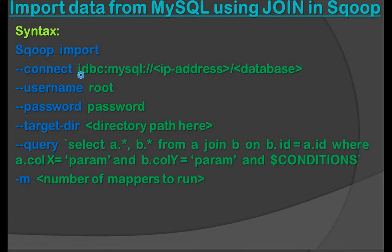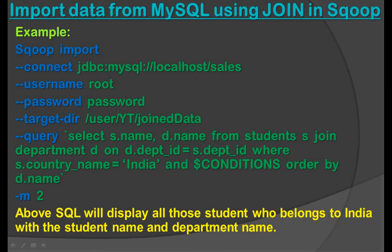Let's see the example. The import statement is: scoop import --connect jdbc:mysql://localhost/sales --username root --password password --target-dir /user/yt/join_data. This is the target directory.